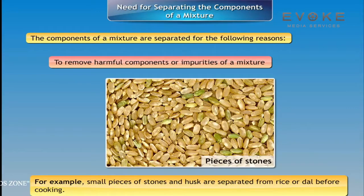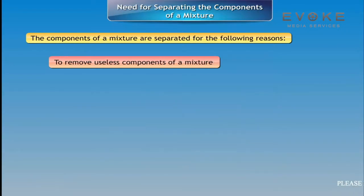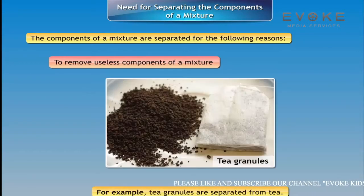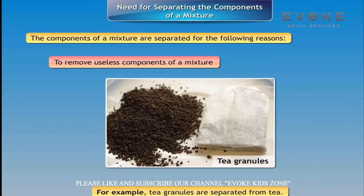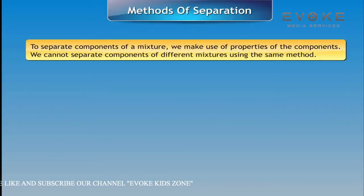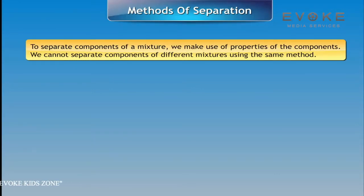Second, to remove harmful components or impurities of a mixture. For example, small pieces of stones and husk are separated from rice or dal before cooking. Third, to remove useless components of a mixture. For example, tea granules are separated from tea.